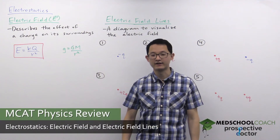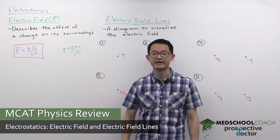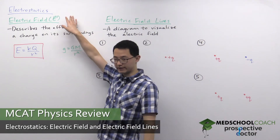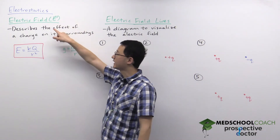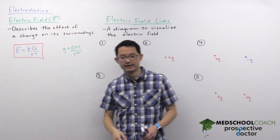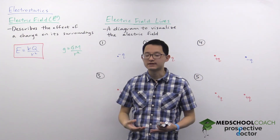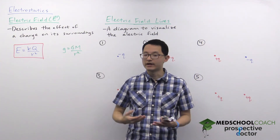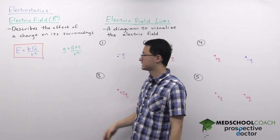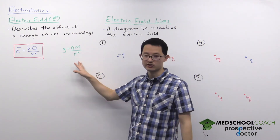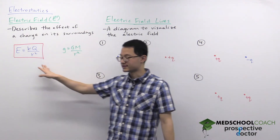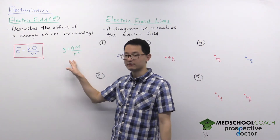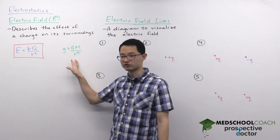In this video we're going to go over electric field and electric field lines. The electric field is denoted by capital E and it's a vector, hence the arrow hat. The electric field describes the effect of a charge on its surroundings. To better understand how this works, let's consider the analogy with gravity — the equation of the electric field is very similar to that of the gravitational field.